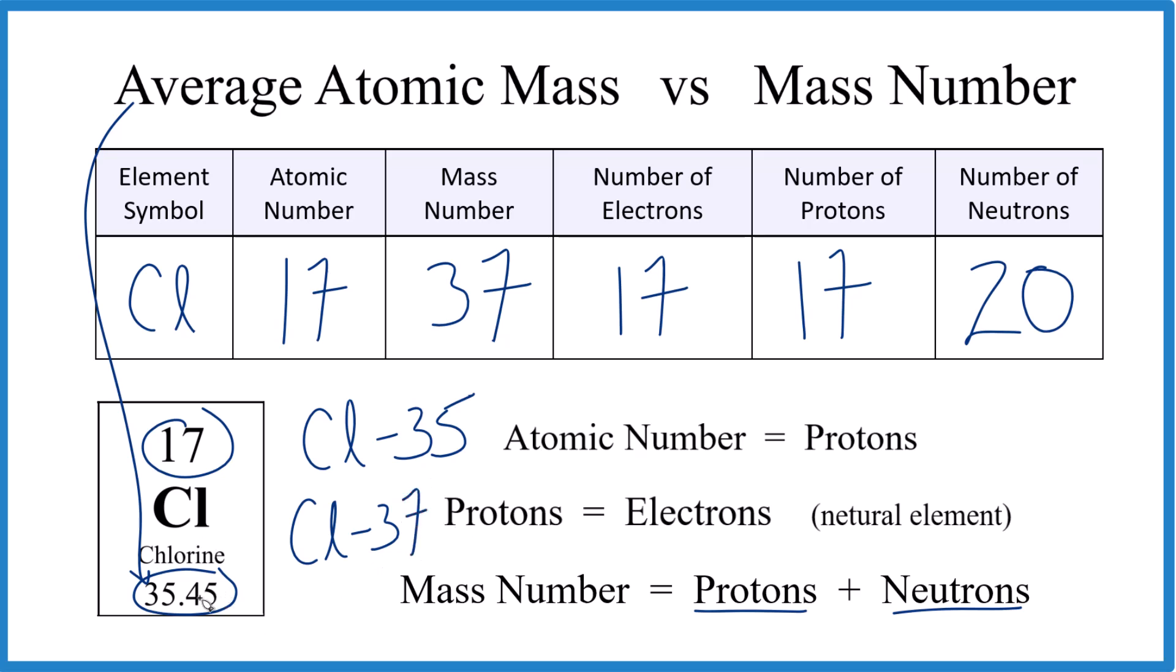And this average atomic mass, it's the average of these isotopes here weighted for their abundance, how many there are of each. So that's where this number comes from. These are for individual atoms. You can think of it that way. Where this here, it's for a sample of atoms.